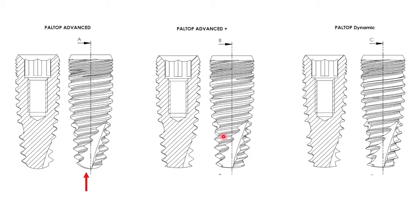The Paltop Advanced Implant has a conical apex. Why do I want a conical apex? If I'm placing an implant in close proximity to something vital that I might hurt or tear — for me, that means near the sinus or Schneiderian membrane, or in some type of open or closed sinus graft. I don't want an aggressive implant. I want an implant that's going to have good stability and a safe apex.